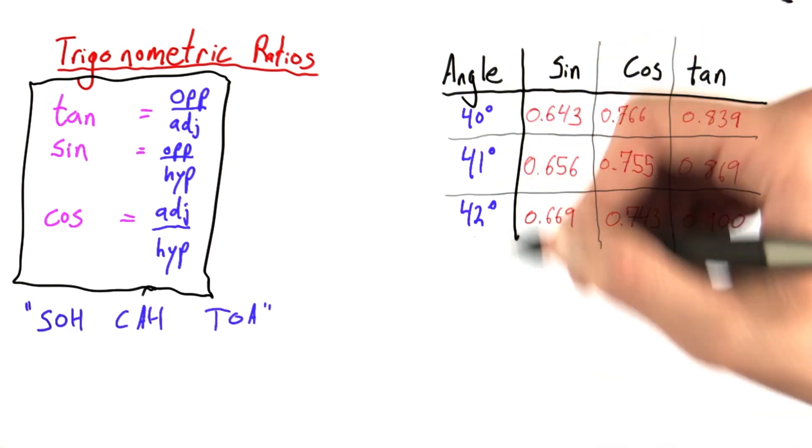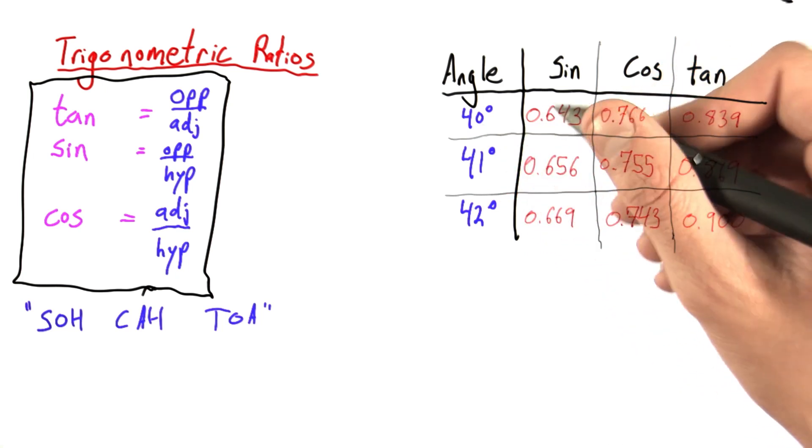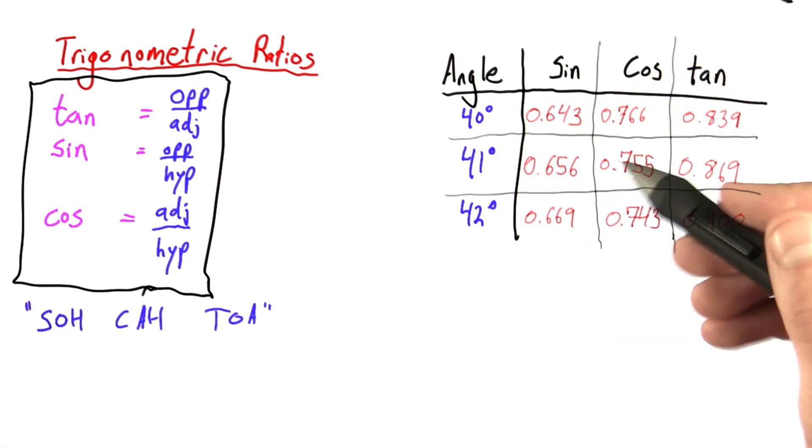In a better table, we'd have a larger range of angles and higher resolutions, so we'd have 40.1 degrees, 40.2 degrees, and so on. But this will work for now.